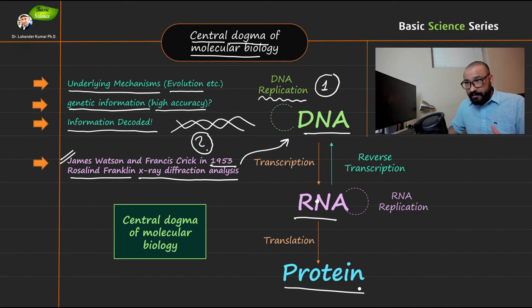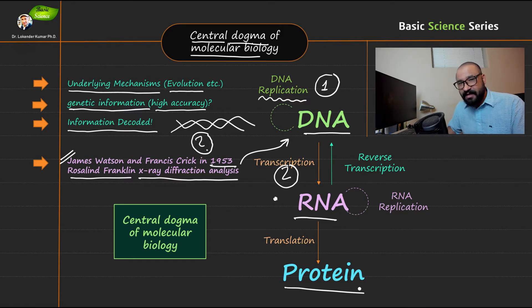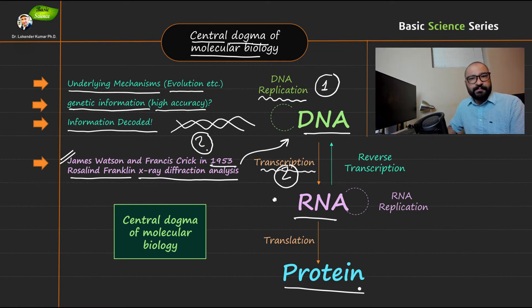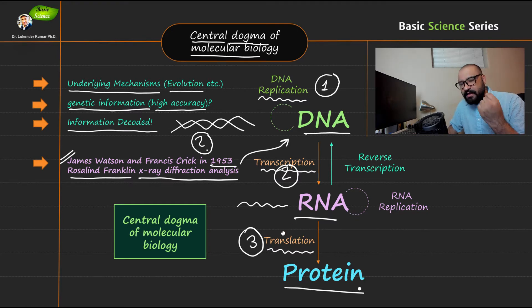That DNA molecule then transcribes the information in the form of RNA. The second step in the central dogma is transcription — generating an RNA molecule. You cannot directly translate the information from the DNA molecule, so there is an intermediate step called transcription. The third step is translation, where that information encoded in the RNA molecule is translated into a functional protein.